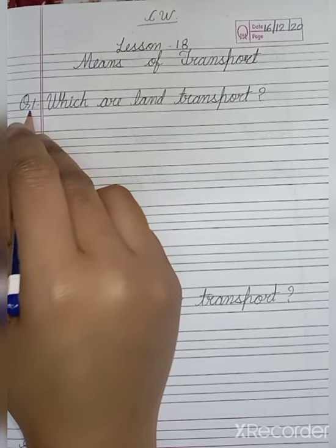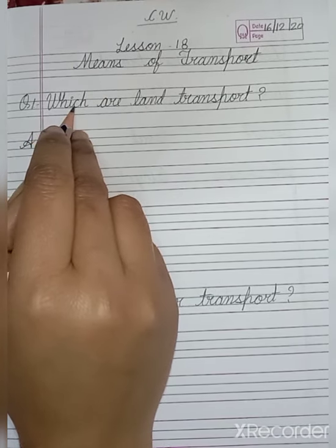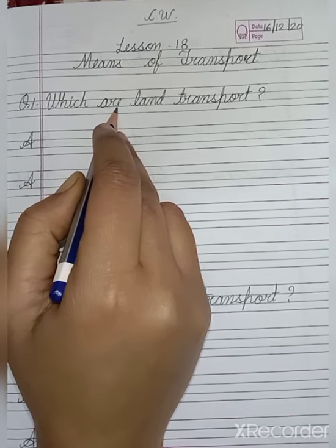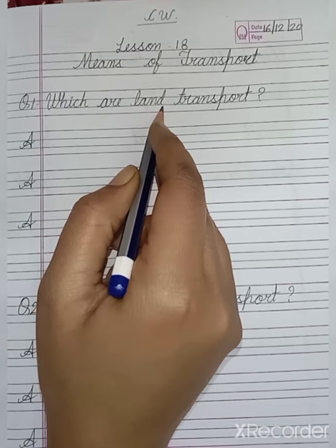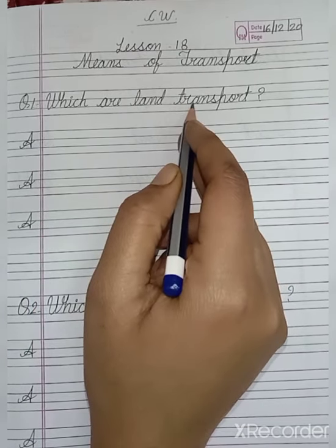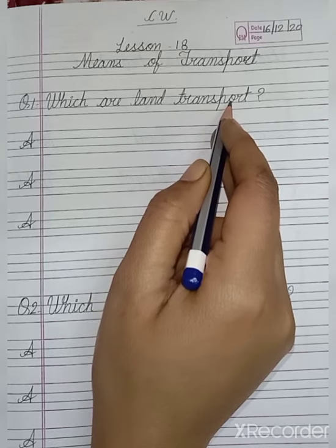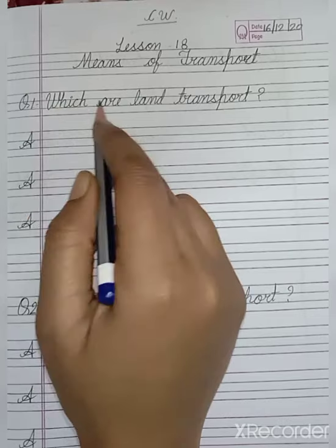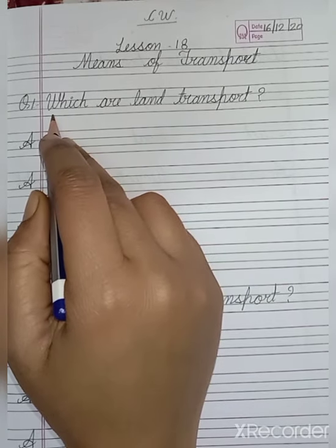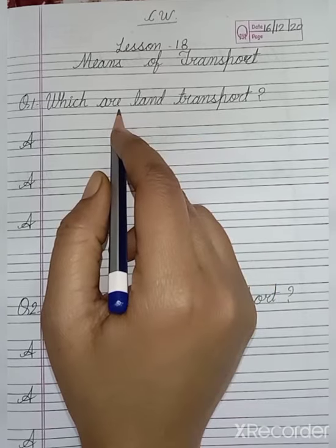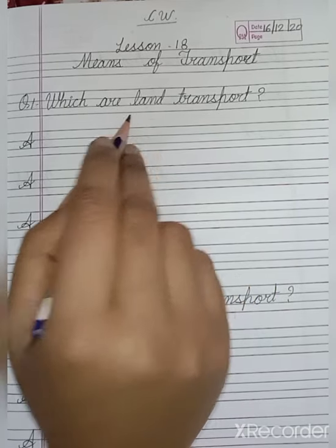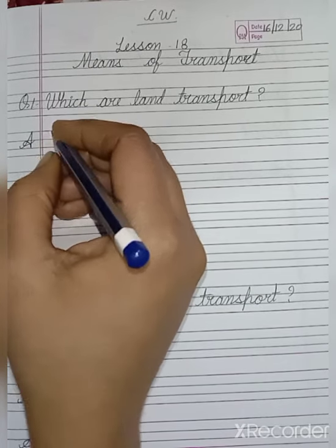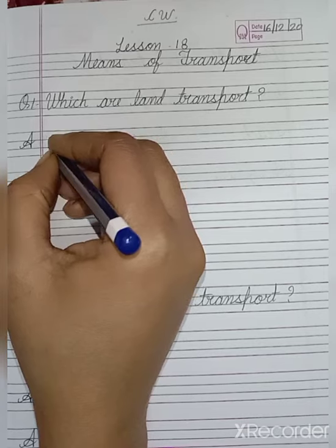And our question is W H I C H which means kaun sa, A R E are means hai, L A N D land means zameen, T R A N S P O R T transport means saadhan. Which are land transports? Matlab zameen par chalne wale saadhan kaun sa hote hain - woh vehicle jo zameen par chalte on road. Now write our answer.